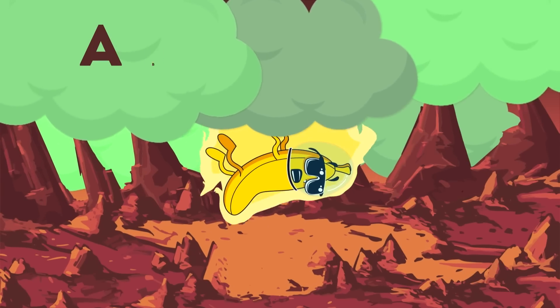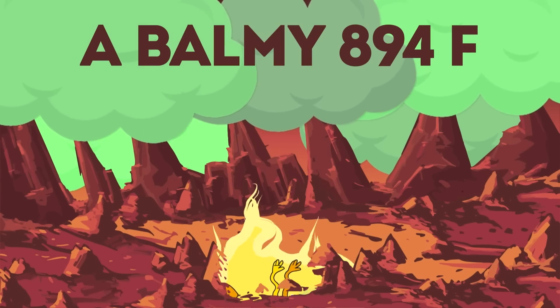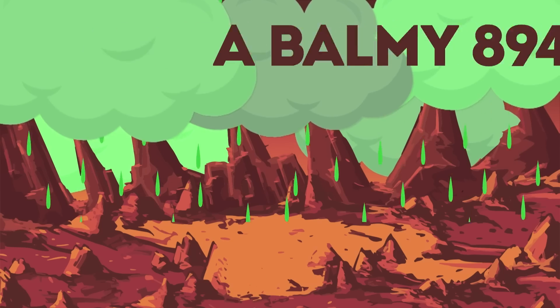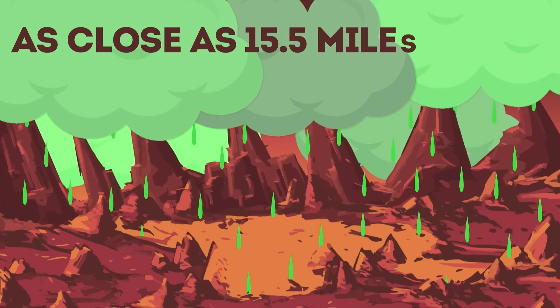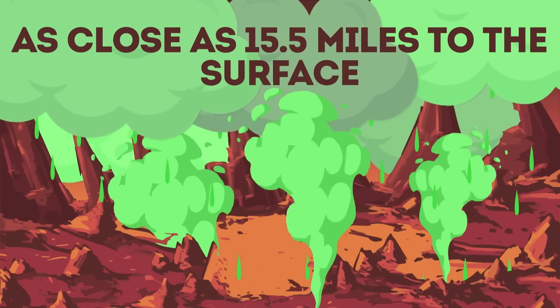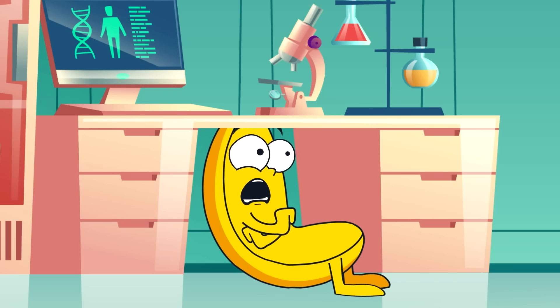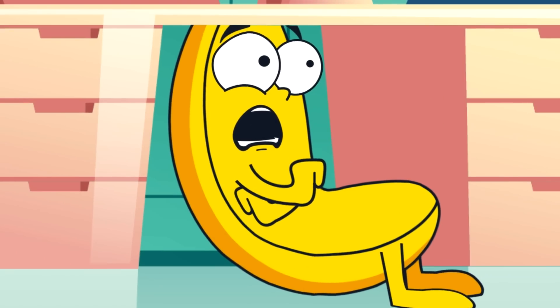Since the surface of the planet hovers at a balmy 894 Fahrenheit, the rain only gets about as close as 15.5 miles to the surface before it becomes gas. Refreshing, incredibly hot sulfuric acid rain.